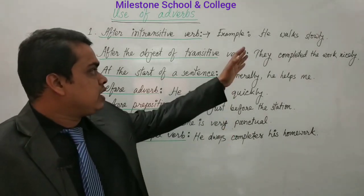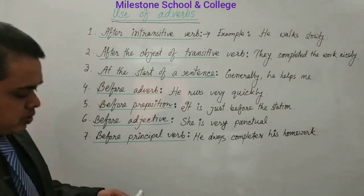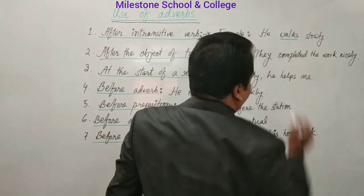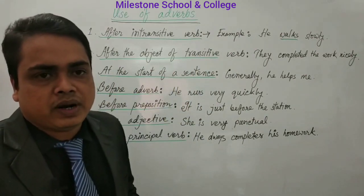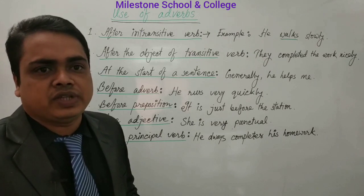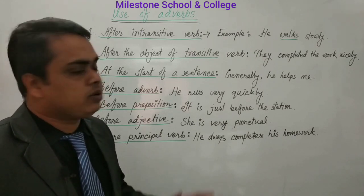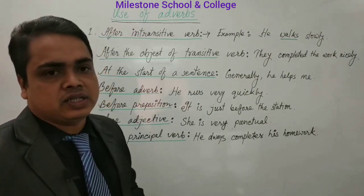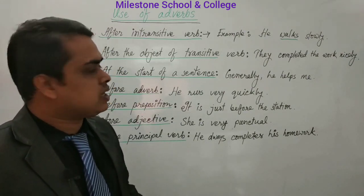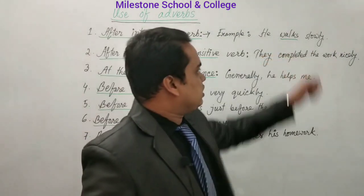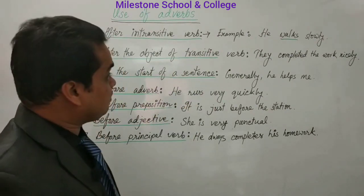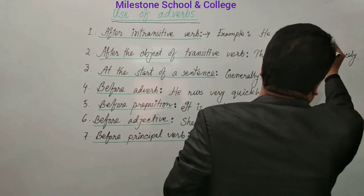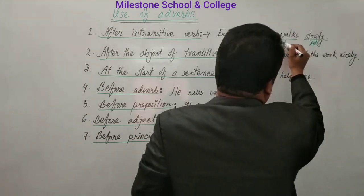I am making it clear with examples. First: after an intransitive verb, we use adverb. The verb that doesn't take an object is called an intransitive verb. Example: 'He works slowly.' Here, 'works' is the intransitive verb and 'slowly' is the adverb. If you make a question with 'what' or 'whom' and get no answer, you have an intransitive verb.